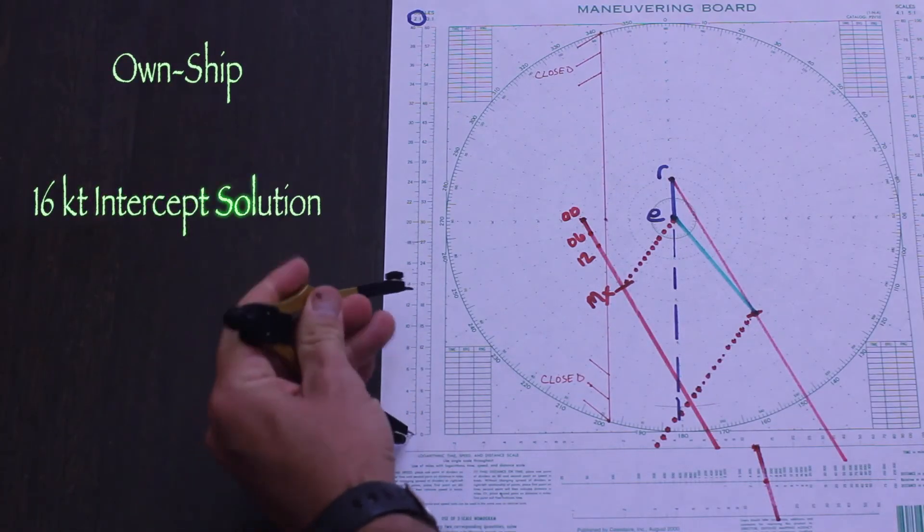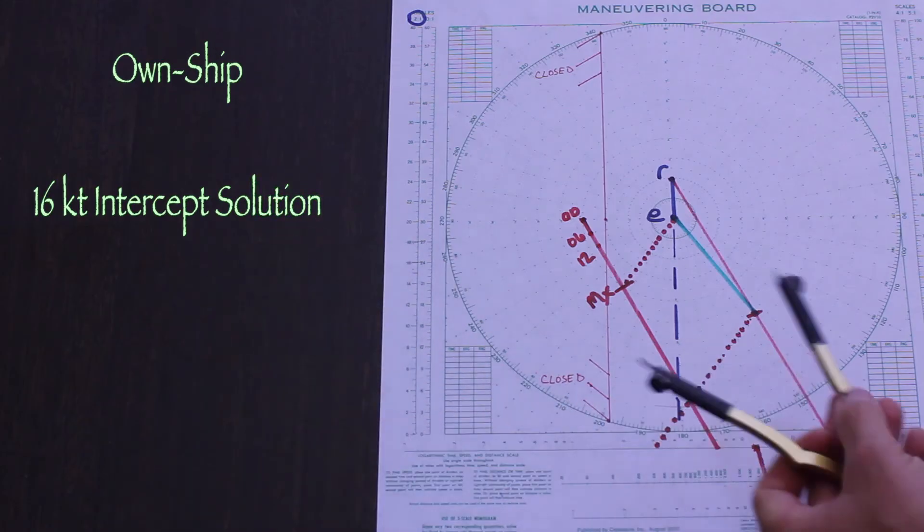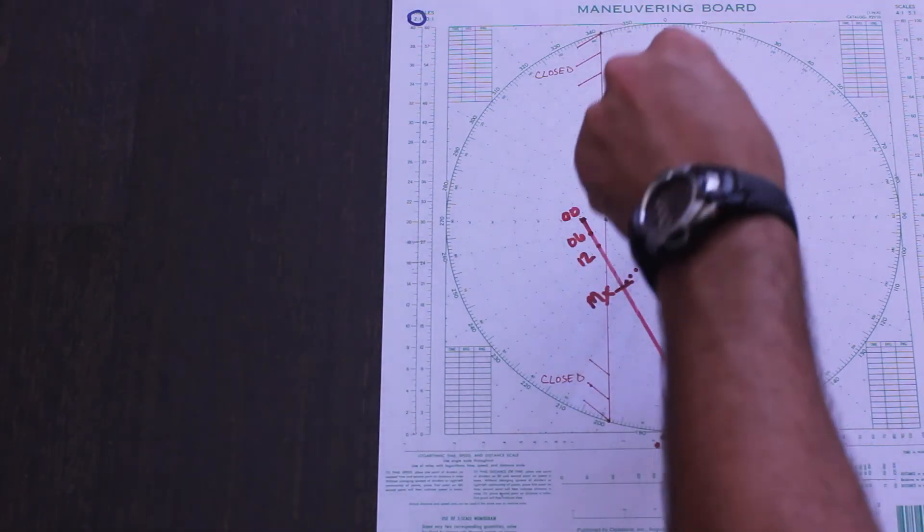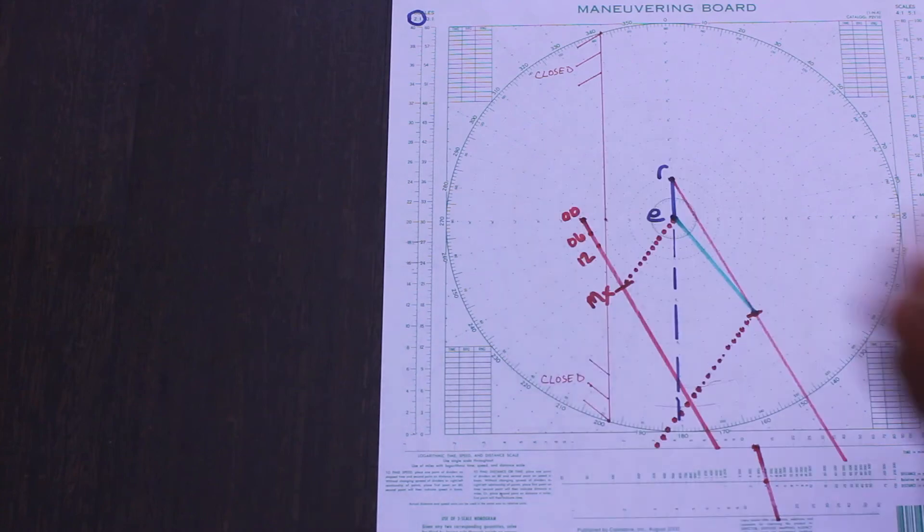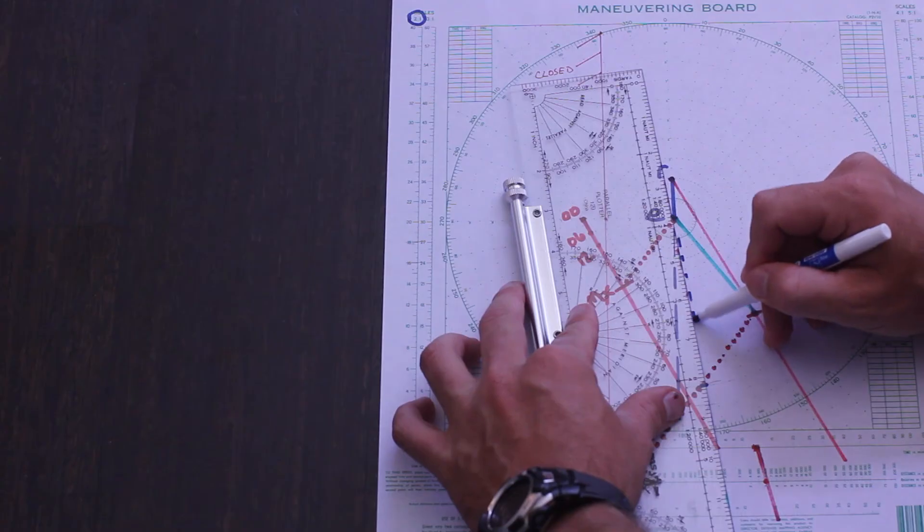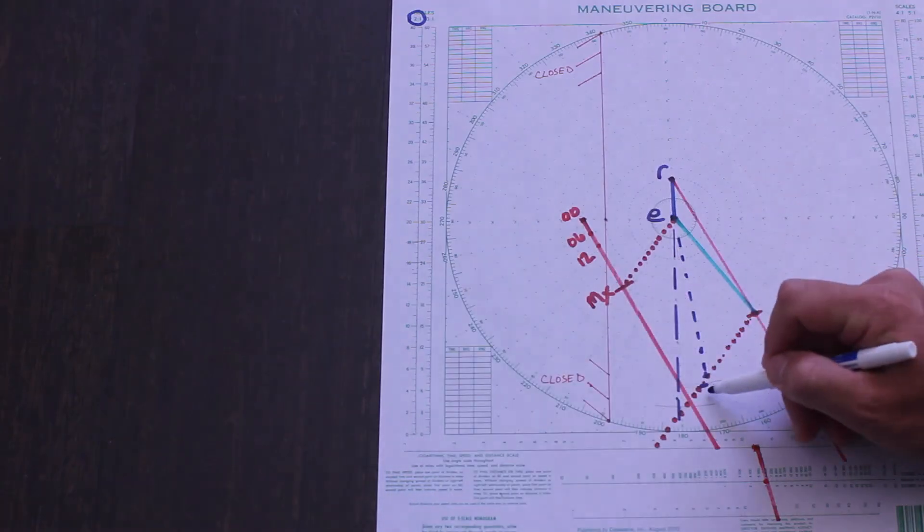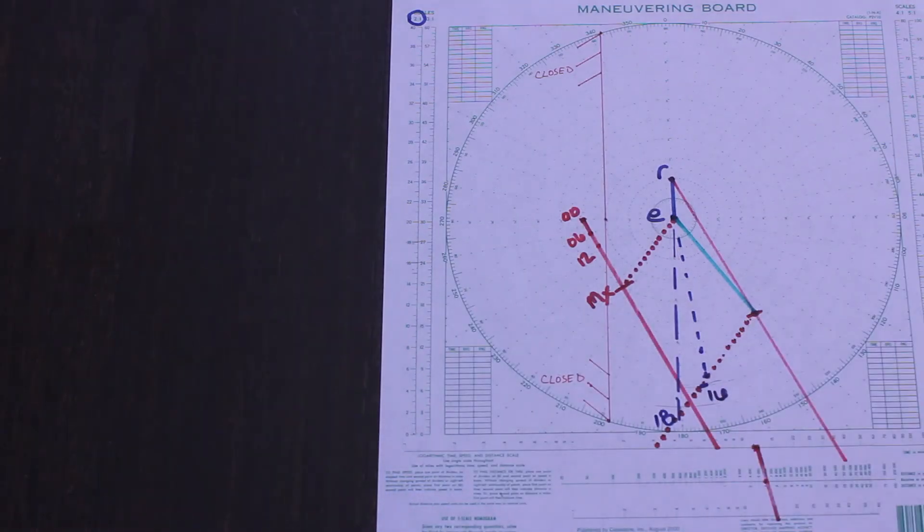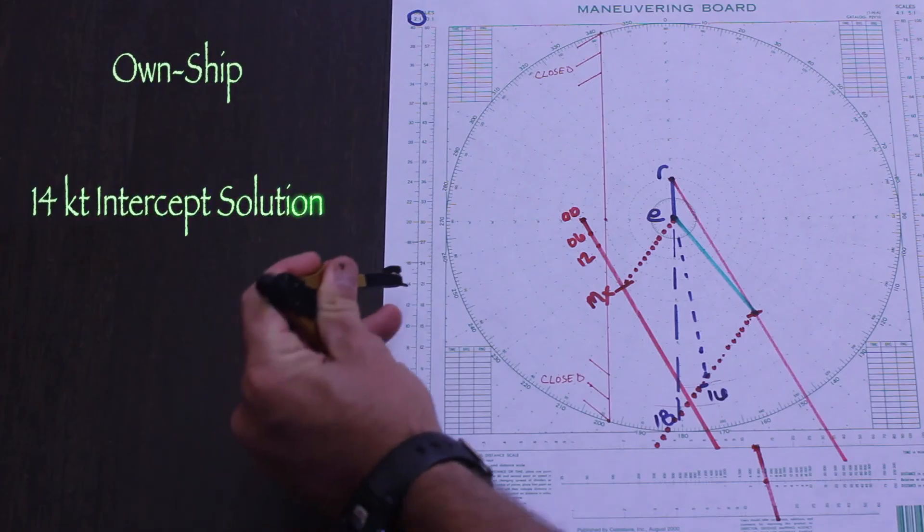If it's a bit rougher, we can also plot an intercept course for 16 knots. And just to hammer home the point, here is a 14 knot intercept solution.